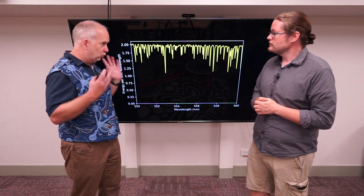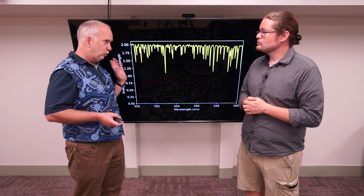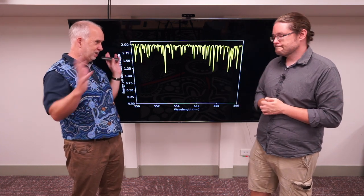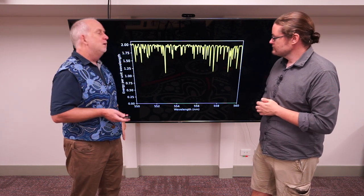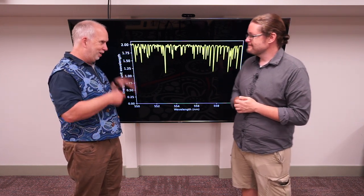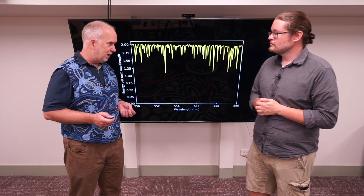We know the composition of the Sun by spectroscopy. We take the light from the Sun divided up into its component wavelengths and all these dips come from different elements. By counting them all and measuring how deep they are, we can work out what the Sun is made of.